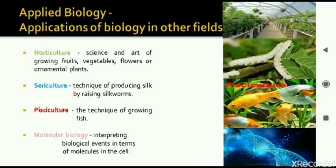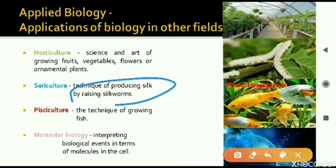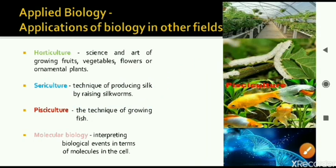Next one is sericulture. Sericulture is the process of producing silk, which is done by the silkworm. The silkworm feeds on mulberry leaves and converts them into silk fibers. So that is all studied under sericulture.